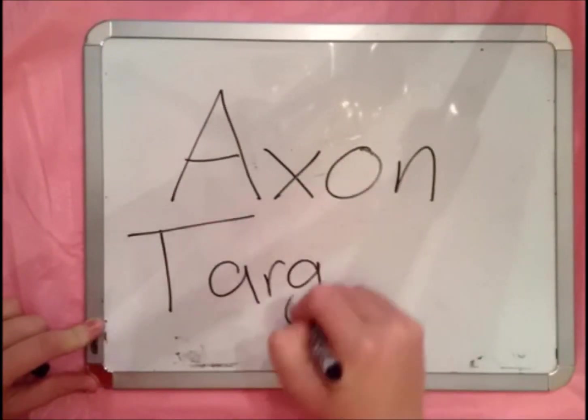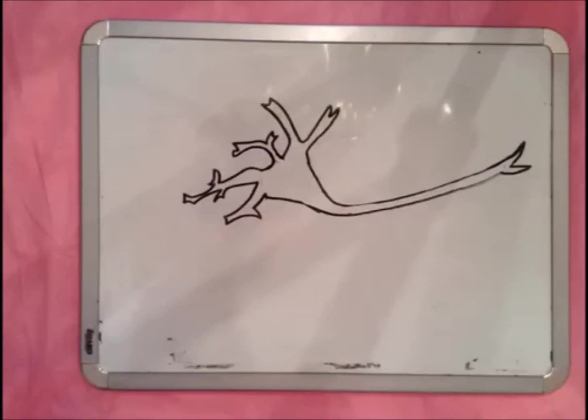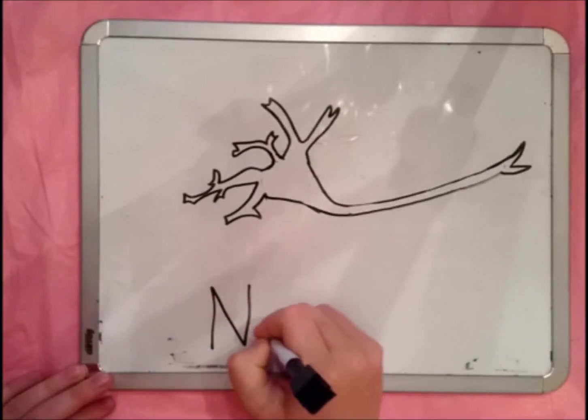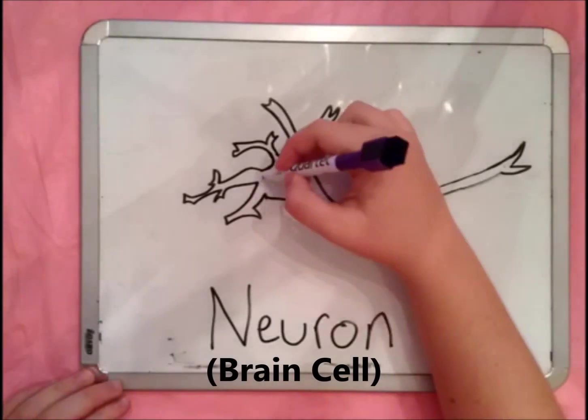Axon targeting is how brain cells figure out how to make these connections. Before we get to that, though, you need to know the basics of a brain cell, also known as a neuron.